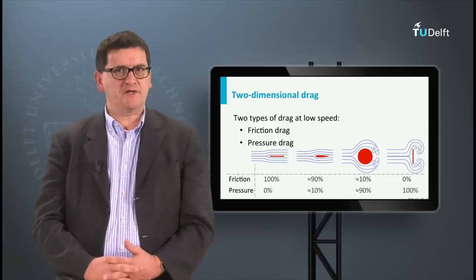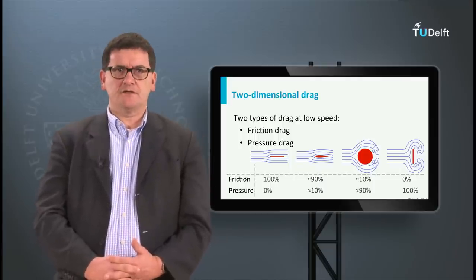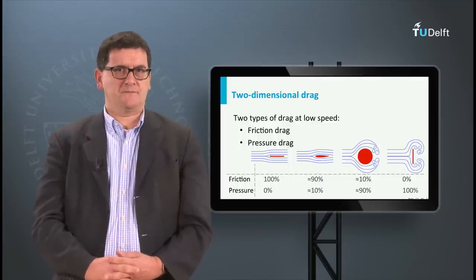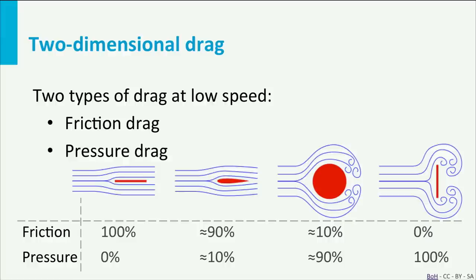To explain the difference between the friction drag and the pressure drag, I ask you to look at the following pictures. From the left to the right you see an increase in pressure drag and decrease in friction drag. Pressure drag is a drag which acts perpendicularly to the surface of an airfoil. The friction drag acts in parallel to the surface of the airfoil.